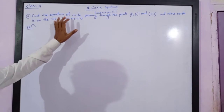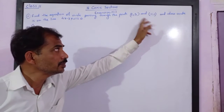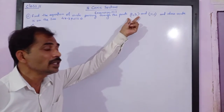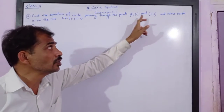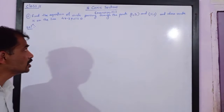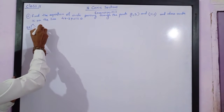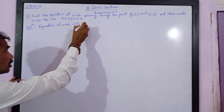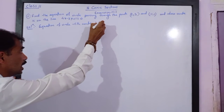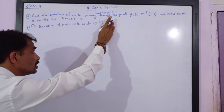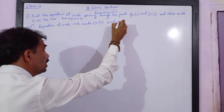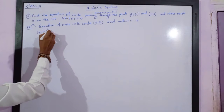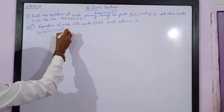Please note: the circle passes through these two points, so these two points must satisfy the equation of that circle. We know that the equation of a circle with center (h, k) and radius r is: x minus h, bracket squared, plus y minus k, bracket squared, is equal to r squared.